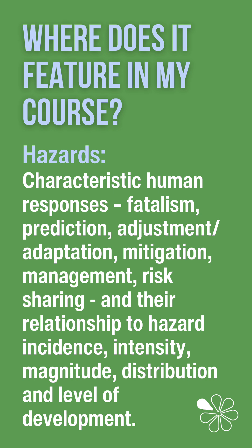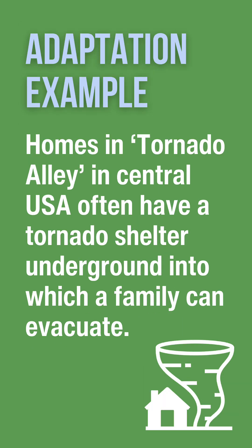Adaptation is all about reducing the impact of the threat, but how we adapt is related to hazard incidence, intensity and magnitude, along with where they occur and the level of development in an area. An example of adaptation is how homes in Tornado Alley in the USA often have underground shelters where people can wait out the tornado until it has passed and it is safe to go above ground again.